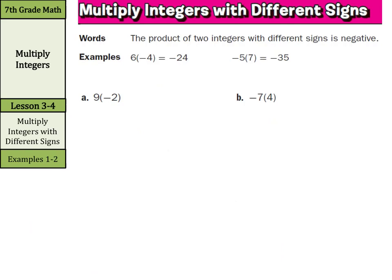Or negative 5 times 7, 7 groups of negative 5 is negative 35. So we'll have 9 times negative 2 is negative 18, and negative 7 times 4 is negative 28.